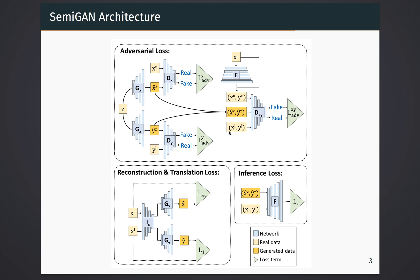Also, we construct an inverse network to project x into a latent subspace and use the reconstruction loss as well as translation loss to train the inverse network.